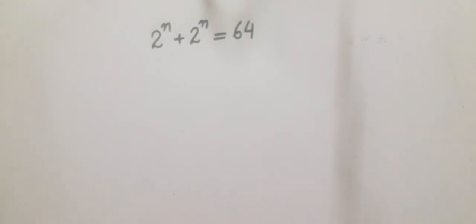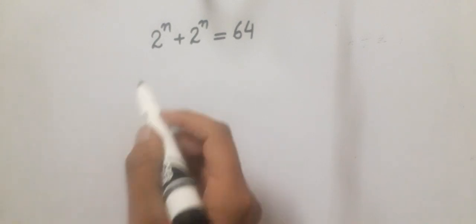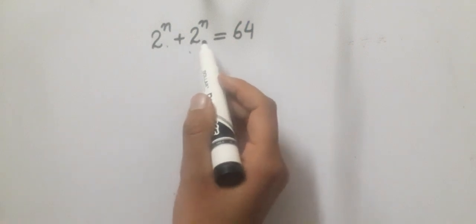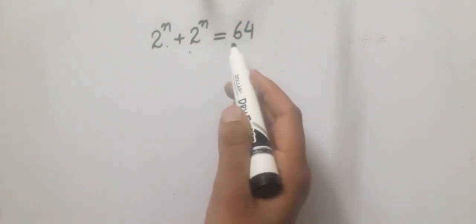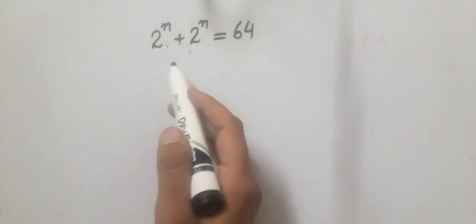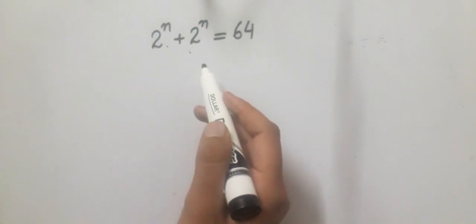Bismillahirrahmanirrahim, assalamu alaikum, welcome back to Math Solver. In today's video we will solve the equation 2 raised to power n plus 2 raised to power n which is equal to 64. This is a great problem for practicing exponent rules.